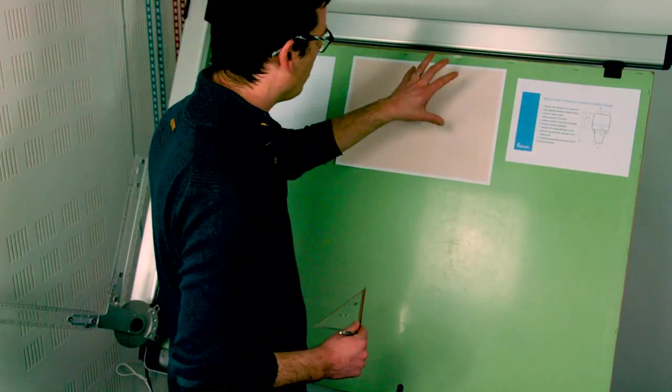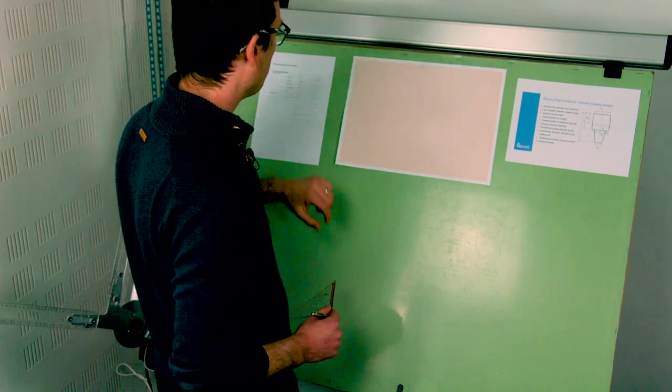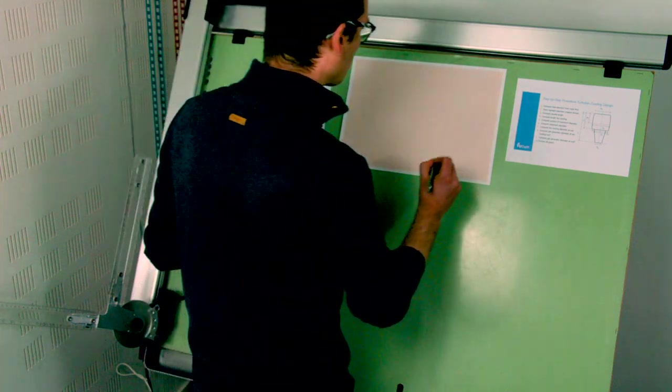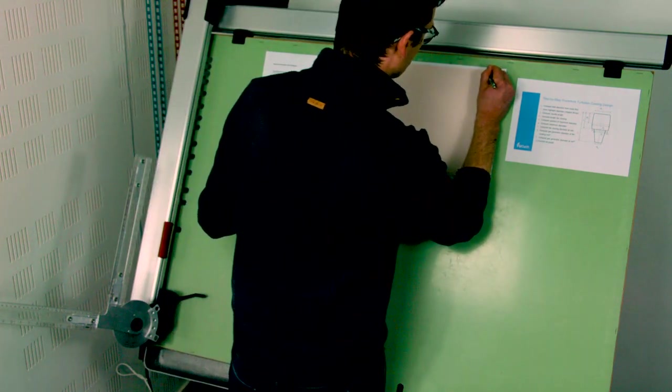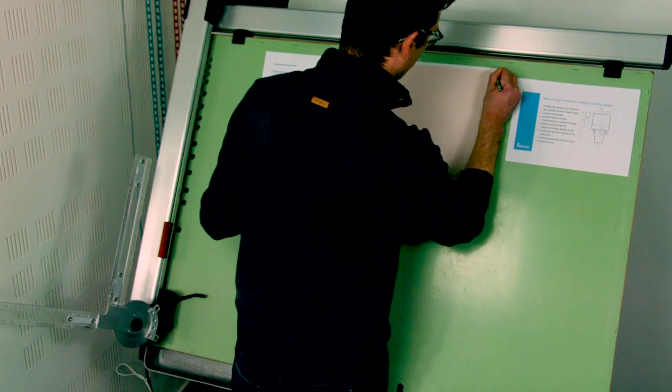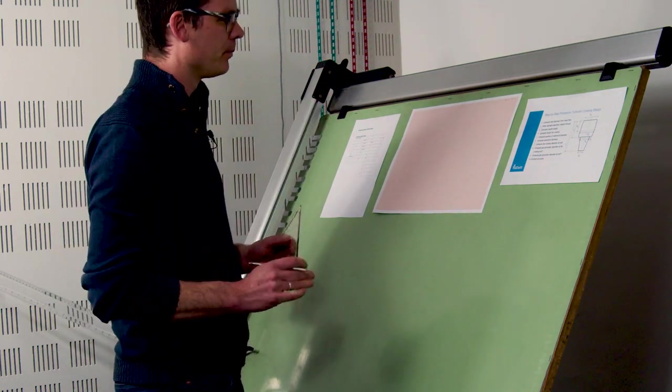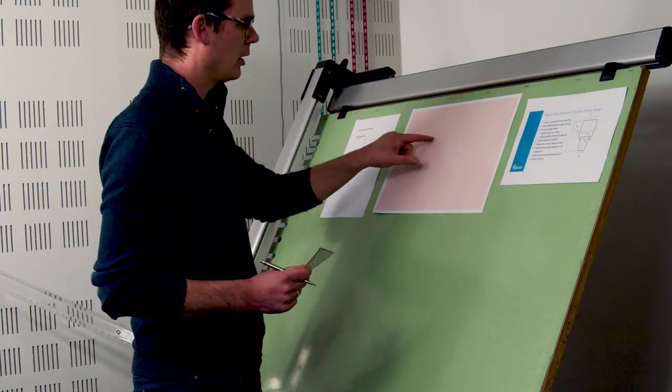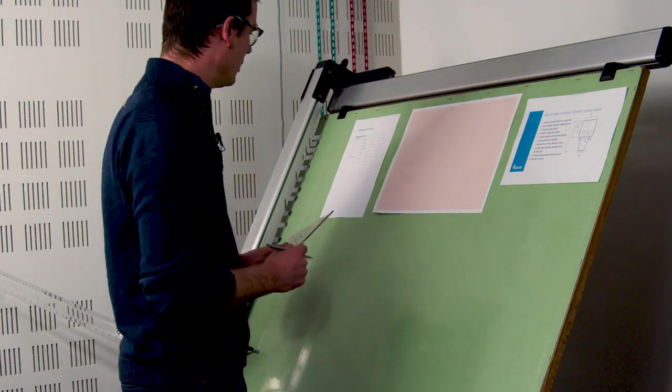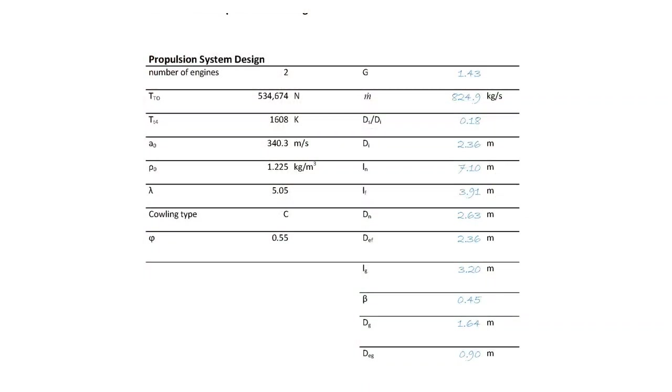Now we're going to draw both the top view of the engine or side view as it is axisymmetric as well as part of the front view. So I'm writing down the scale for future reference 1 to 25 and the first thing I'm going to do is draw the reference center line of the engine. I'm looking at my data sheet here and seeing that the diameter of the engine maximum diameter is 2.63 meters.